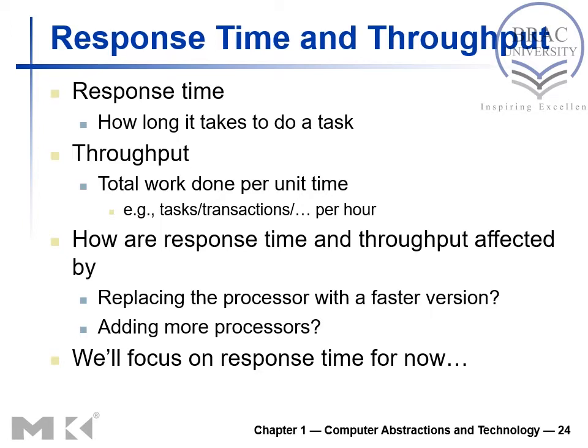Throughput is total work done per unit time, so it is a measurement of how the system is performing. For example, for a printer, if a printer can print 10 pages per minute, then the throughput of that printer would be 10.